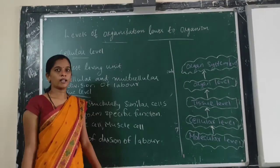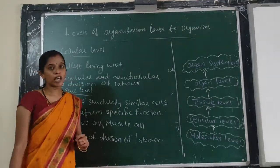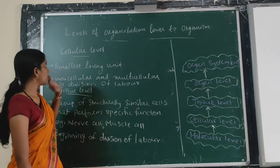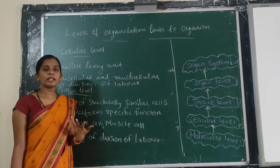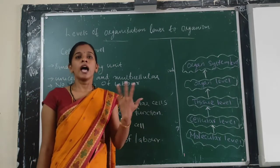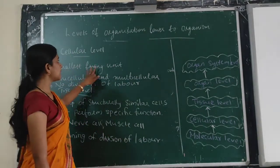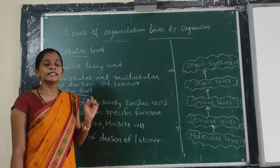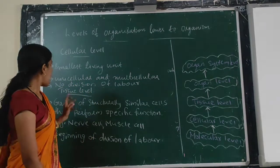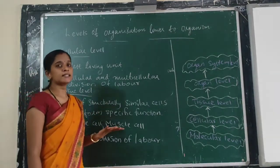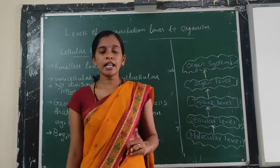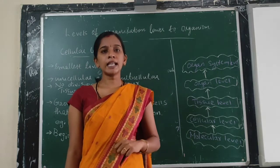Next, we want to discuss the cellular level. As already mentioned, cells are the basic structural and functional unit of life. These are the smallest still-living units. Based on the number of cells, organisms can be classified into two types: unicellular organisms and multicellular organisms.